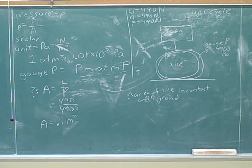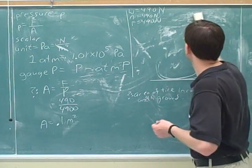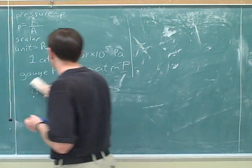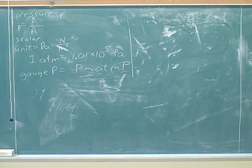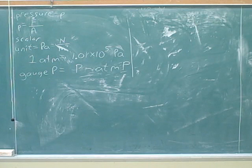So I want area, total area in contact. Each tire is 230 kilopascal, so does that mean that I have to multiply this by 4? To get a bigger pressure?